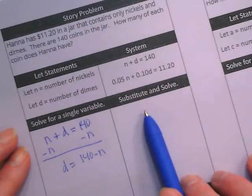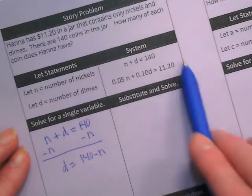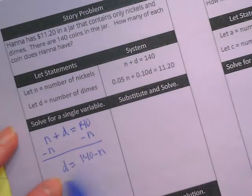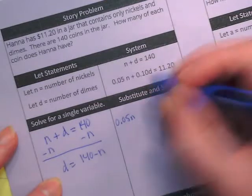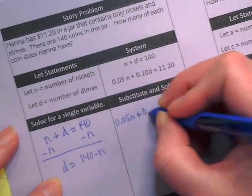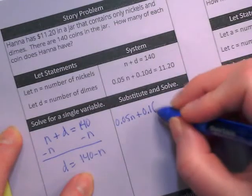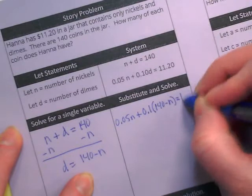What does the next part of our graphic organizer say? Substitute and solve. We're going to take the second equation, and we're going to sub this in where the D is. 0.05 for the nickels plus 0.1 times 140 minus N equals 11.20.